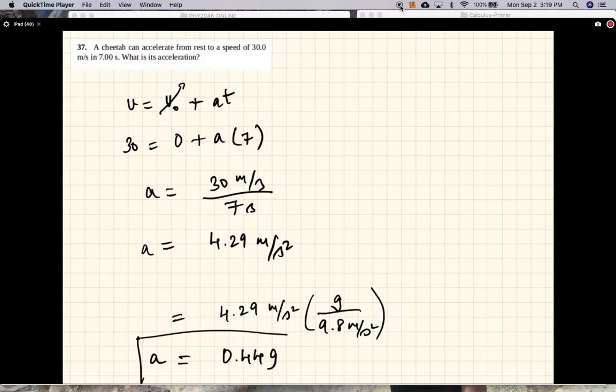So the cheetah can accelerate at 0.44 g. What this means is 1 g, mg, is the weight of the cheetah. That means it can apply an accelerating force equal to 44% of its body weight. Pretty good.